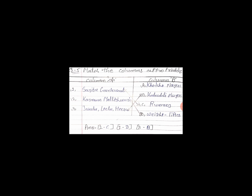Column A, first — Sarita Guyquard. Was she a Kho-Kho player? No. Weight lifter? No. Kabaddi player? No. Runner? Yes. Sarita Guyquard — Runners. So match it. In number 1, number C. Draw the line.